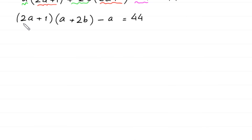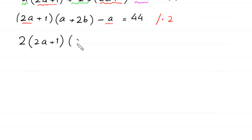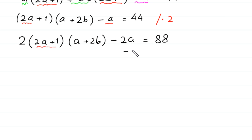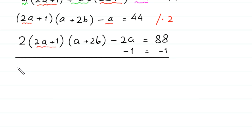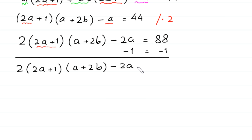Next, because we have 2a in the first factor and 1a in the second part, to make this 1a into 2a we multiply both sides of this equation by 2: 2 times 2a plus 1 times a plus 2b, minus 2a is equal to 44 times 2, which is 88. Because we have 2a plus 1, we subtract 1 from both sides: 2 times 2a plus 1 times a plus 2b, minus 2a minus 1 is equal to 88 minus 1, which is 87.